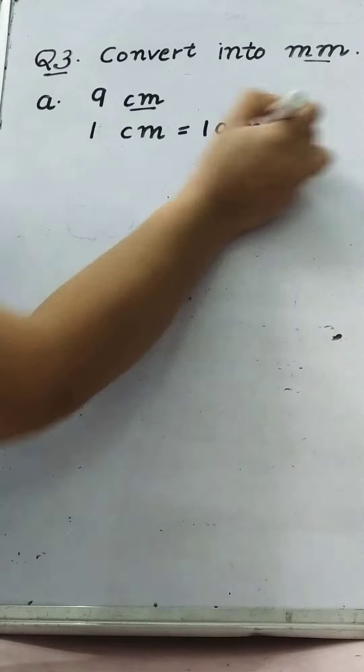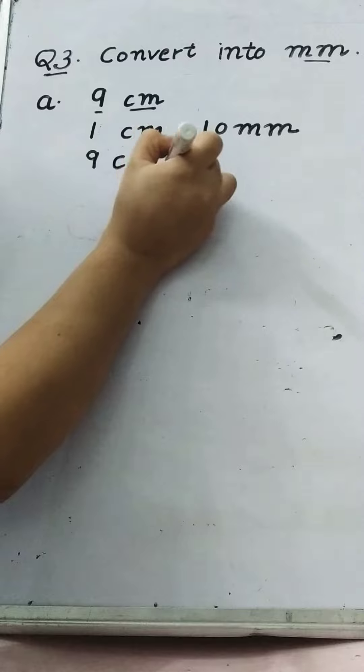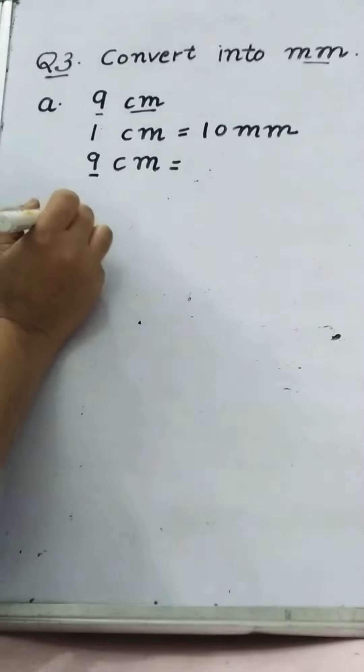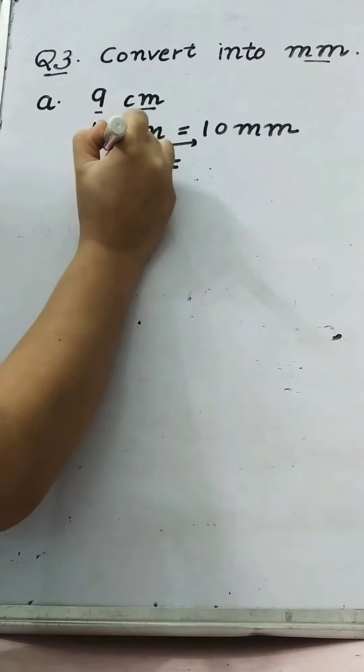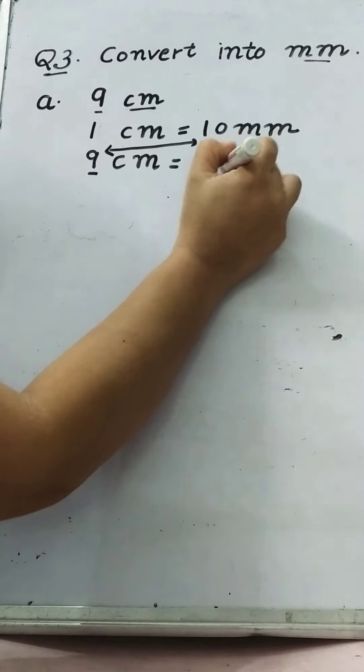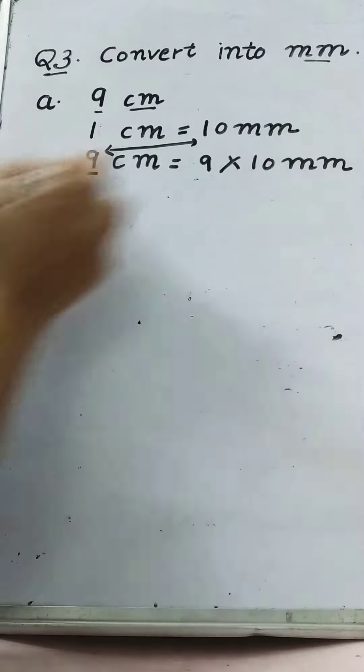And 9 cm will be, we are finding for it so we will multiply. So 9 multiplied by 10. We are converting in millimeter so I will write millimeter here.